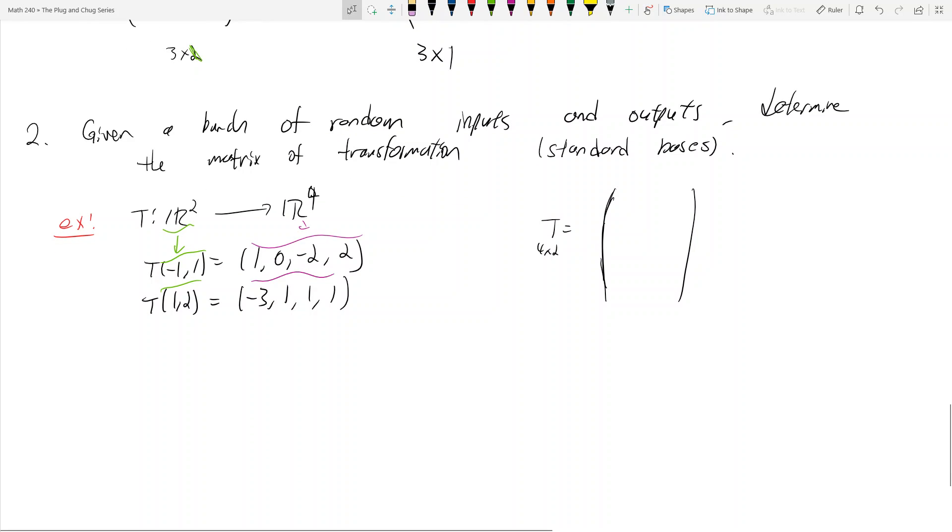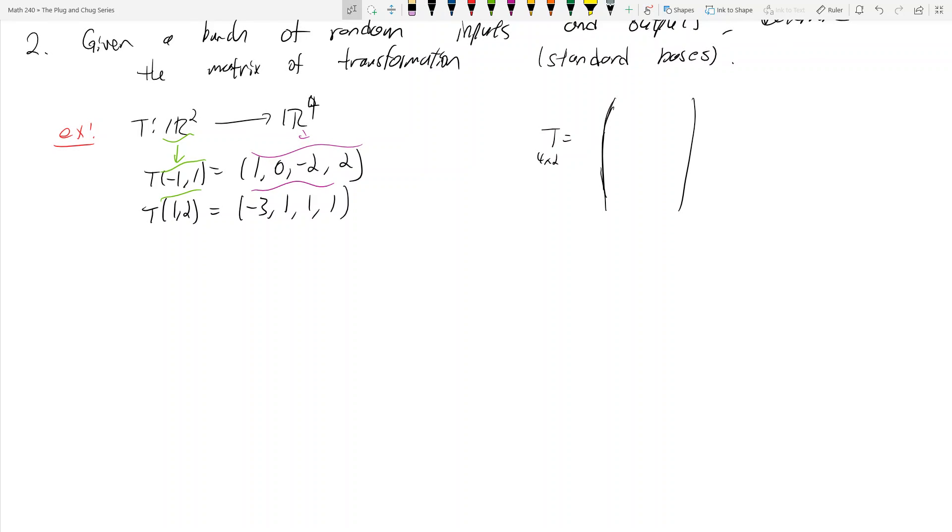What do we do from here? Well, let's write each one of these guys as column vectors because you want to write almost everything in this class as column vectors. A major theme, even in the earlier chapters, is just how can I write this problem in terms of just column vectors and matrices, right? So right now, let's write this as T of (−1, 1) equals (1, 0, −2, 2) and T of (1, 2) equals (−3, 1, 1, 1). Well, we can do this.